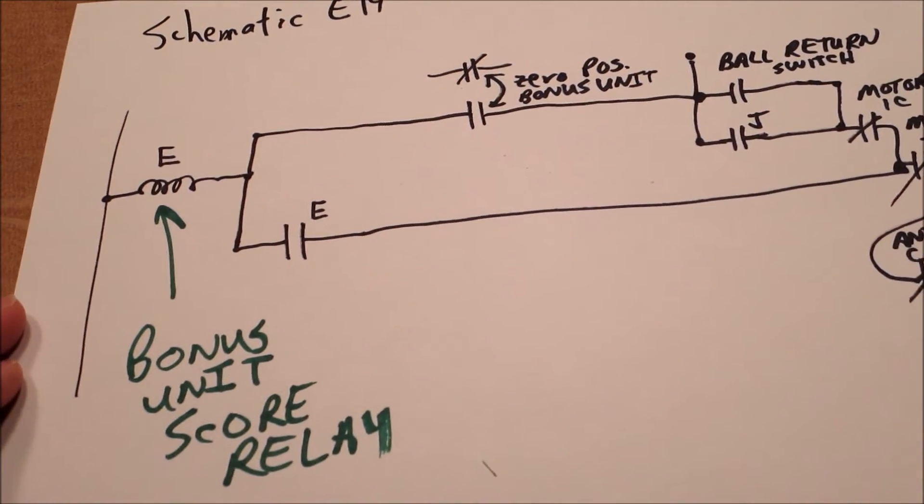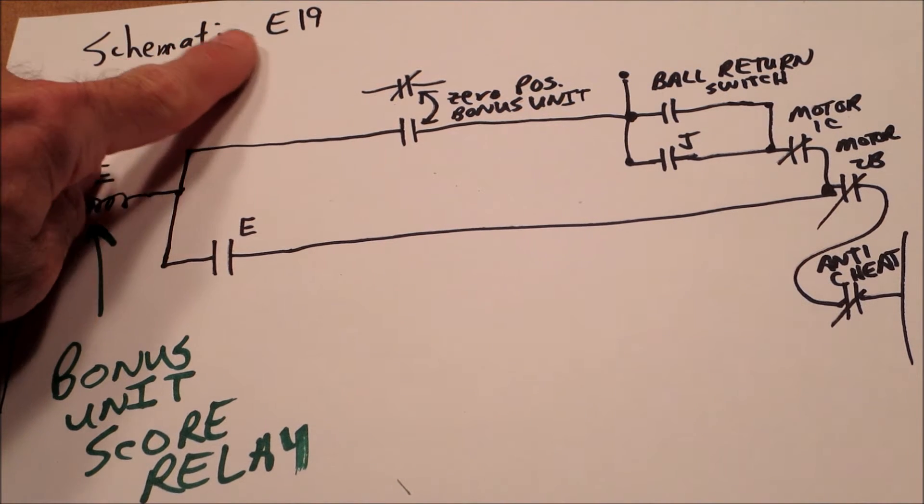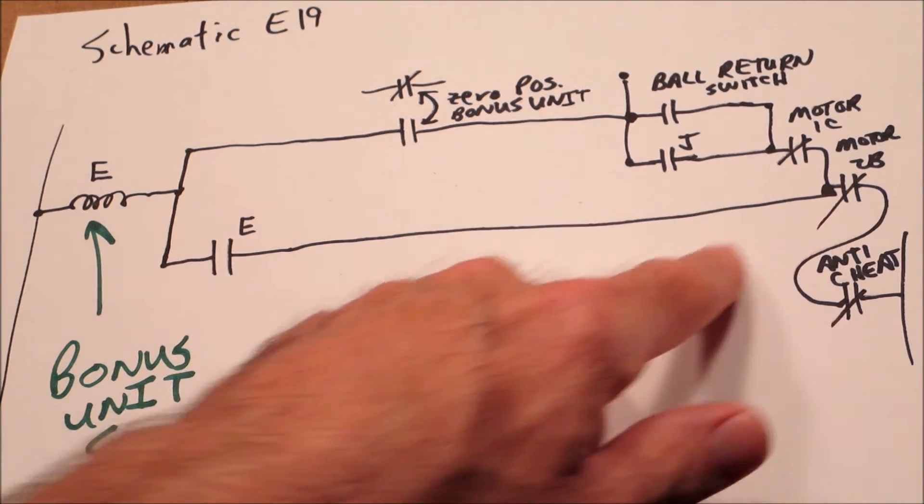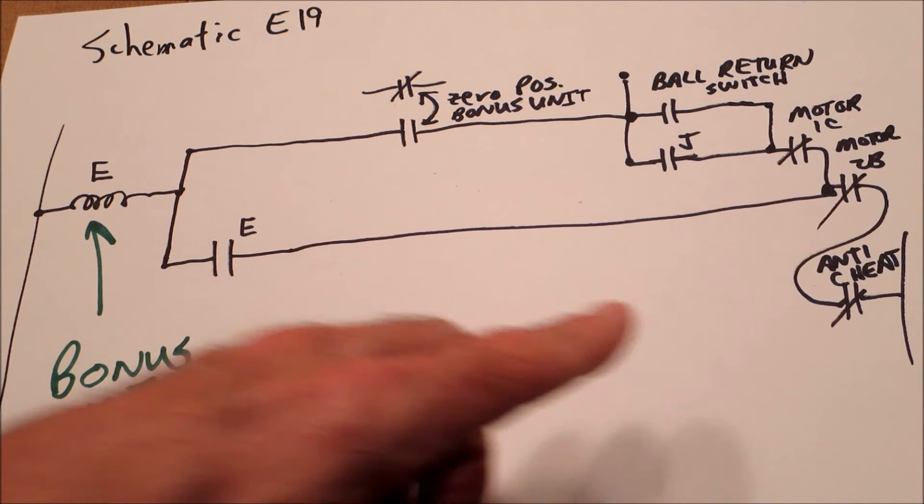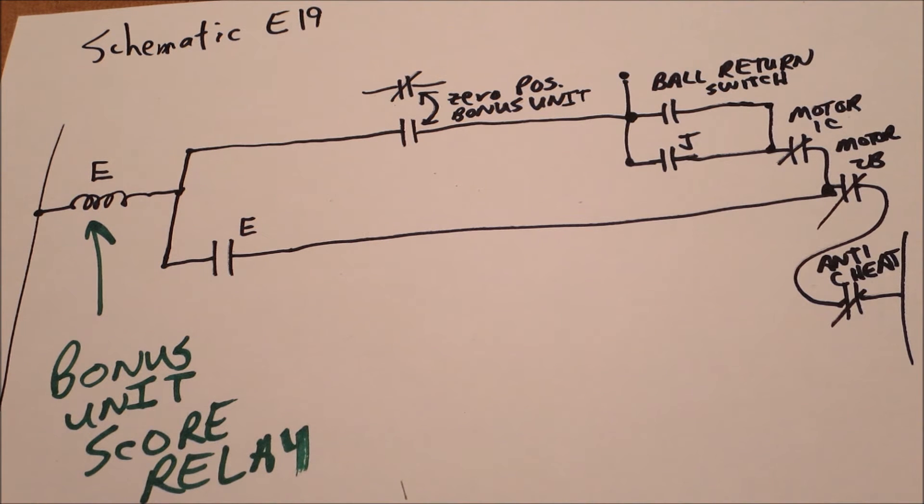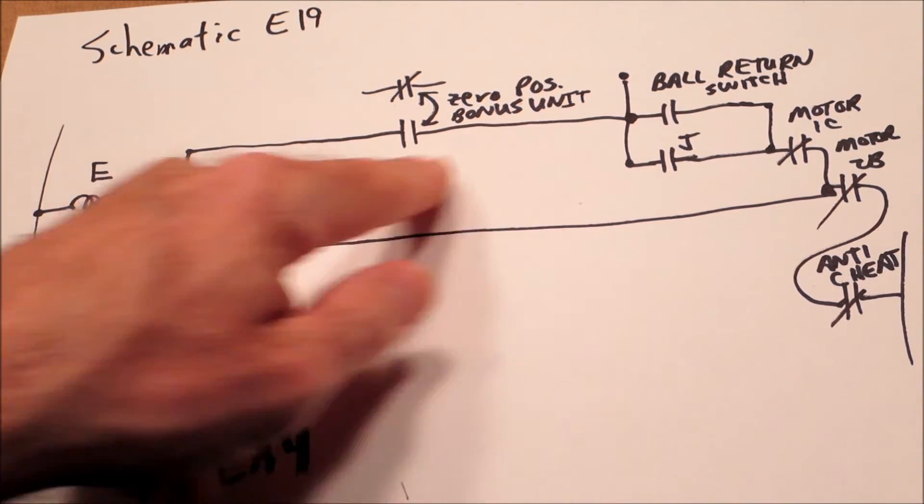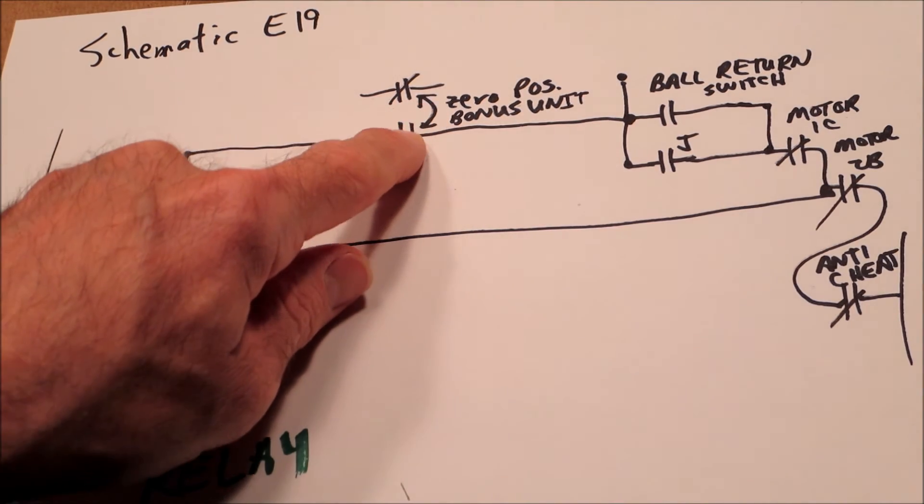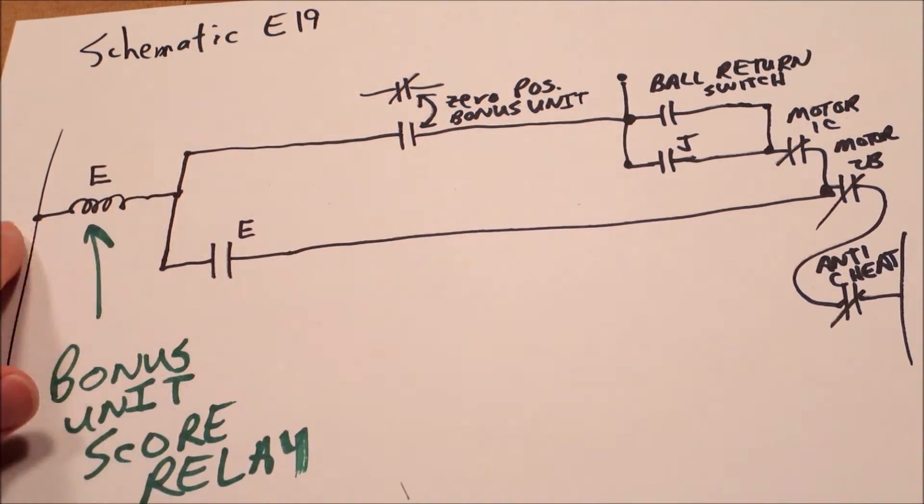So this is the bonus unit score relay. It's E on the schematic, section E19. And we don't have to worry too much about all of this, but remember I said once that bonus moves, once there's some bonus, there are four switches that close. And they're all called zero position bonus unit. In this case, the bonus unit score relay, that switch closes so that we have almost a complete circuit here.